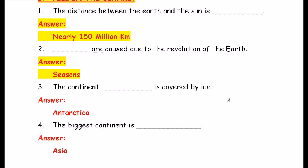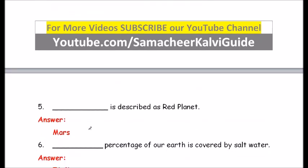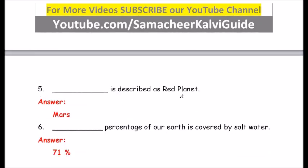Question number 3: The continent dash is covered by ice. The answer is Antarctica — A N T A R C T I C A. Question number 4: The biggest continent is dash. The answer is Asia — A S I A.